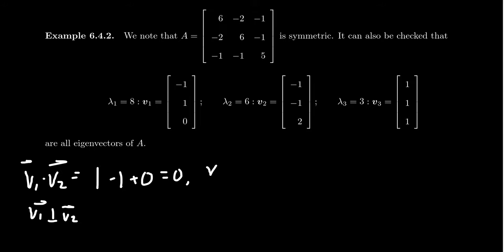Next, we take V1 dot V3. In that situation, you'll end up with negative 1 plus 1 plus 0. So that's again also 0. And thus showing us that V1, oh I said V2 there, I meant V3, sorry. V1 dot V3, that's equal to 0. So we get that V1 is orthogonal to V3.